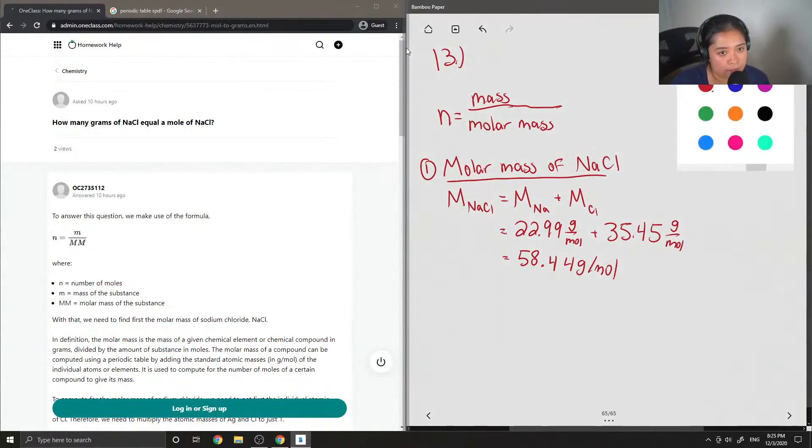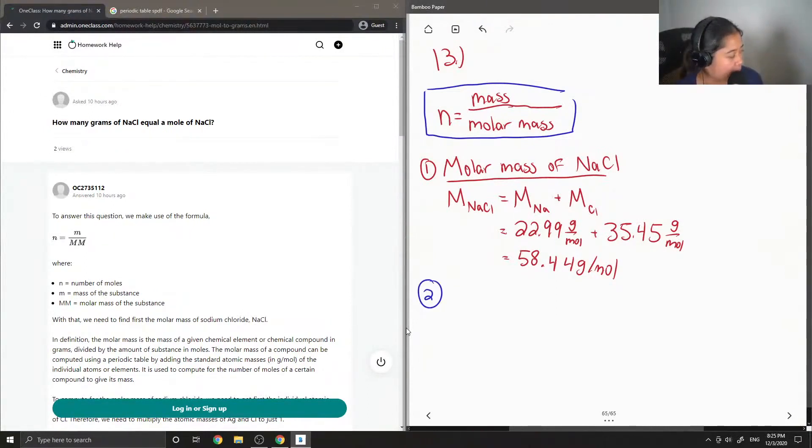So the second part of this question is to use the number of moles equation. So how many grams of NaCl is equal to a mole of NaCl? So we know that the number of moles is equal to 1, and we know that the molar mass of NaCl is equal to 58.44 grams per mole. So we just have to rearrange the first equation and then solve for the unknown.